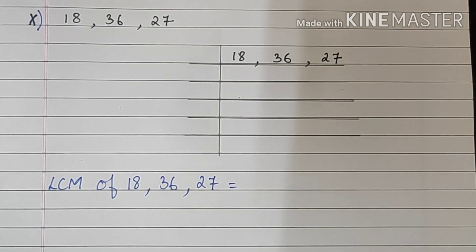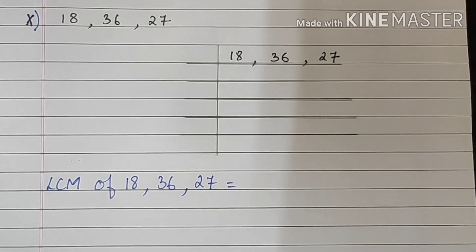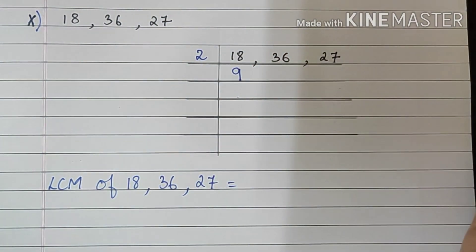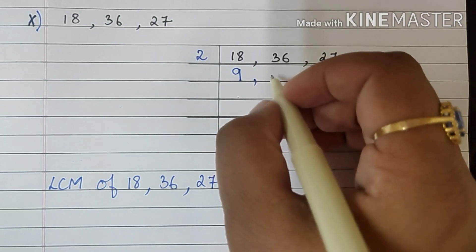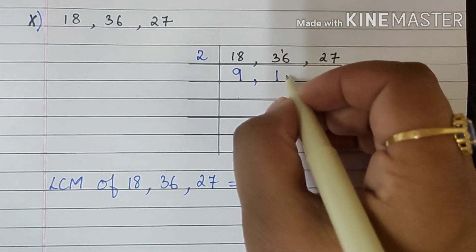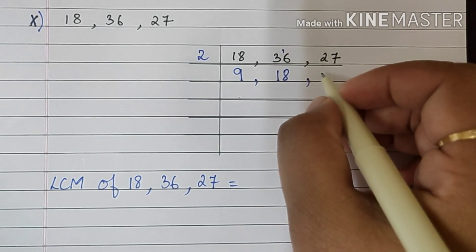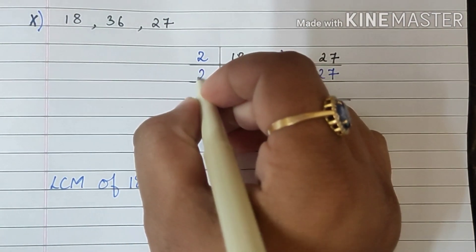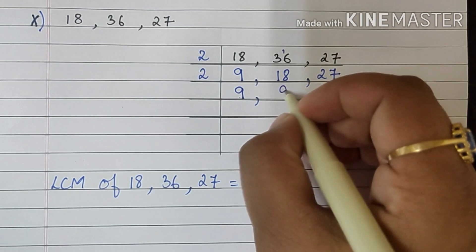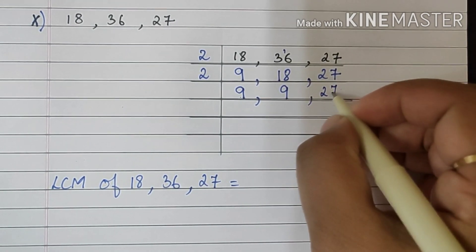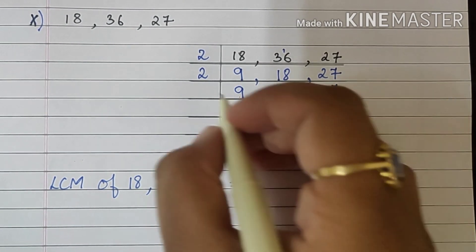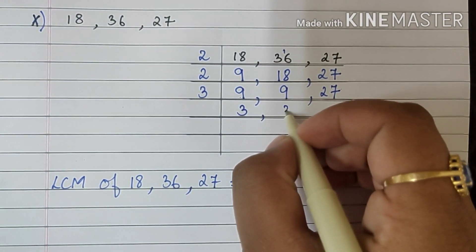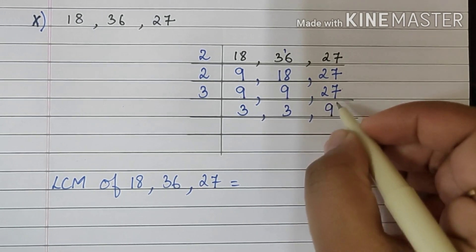Now the last sum. Sum number 10: 18, 36 and 27. So we will begin with 2. 2 9s are 18. 2 1s are 2 carry 1, 8s are 16. And 27 will come down as it is. Now this again is divisible by 2, so we will write here 2. 9 will come down. 9s are 18. And 27 will come down as it is. Now all these numbers are divisible by 3. So we will write 3. 3s are 9, 3 3s are 9, 3 9s are 27.